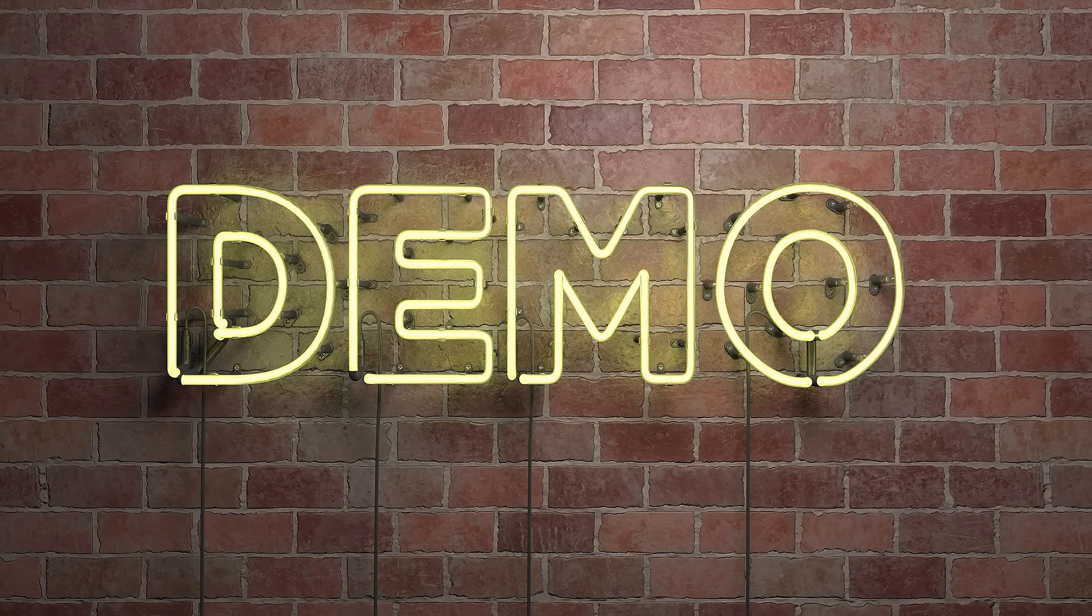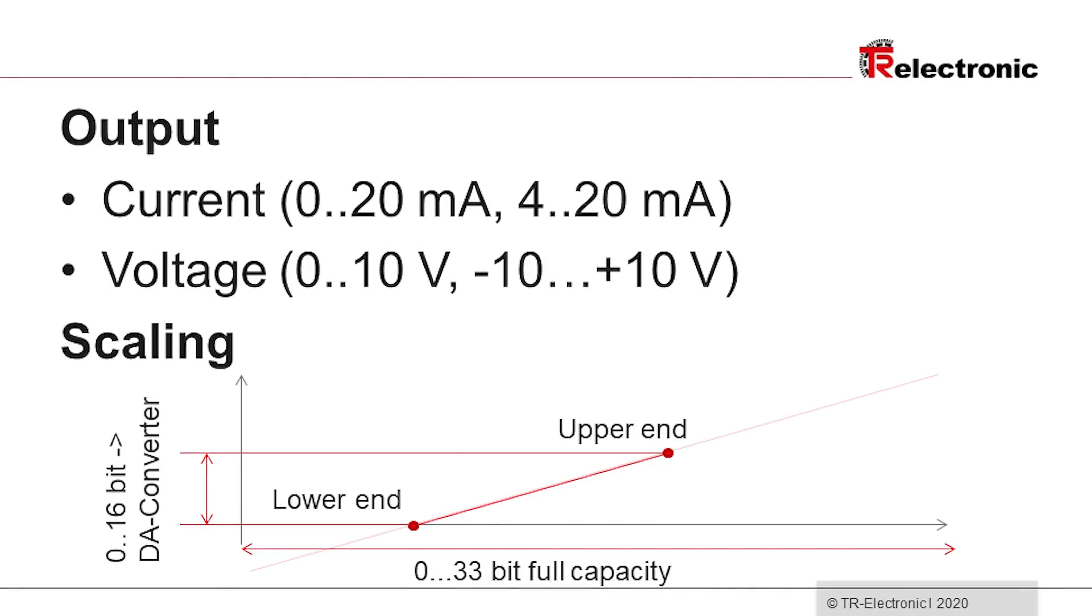In the following steps I will demonstrate how to scale the encoder's measuring range and switch between the different analog output modes using the teach button.